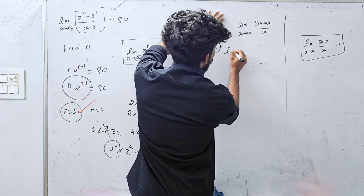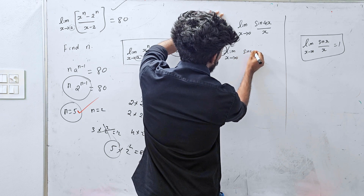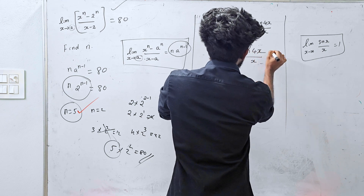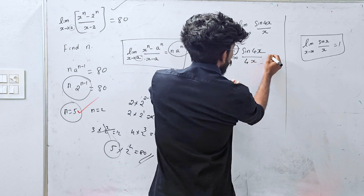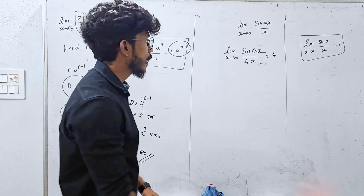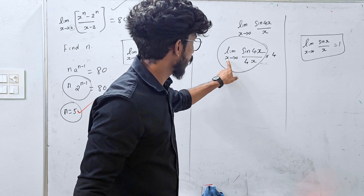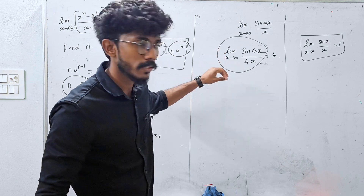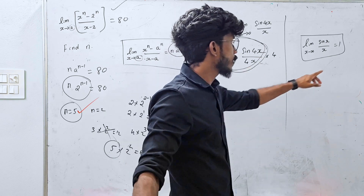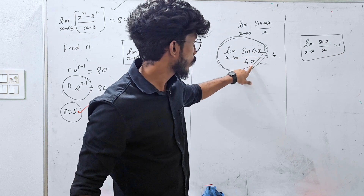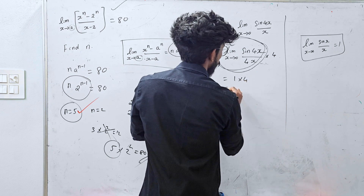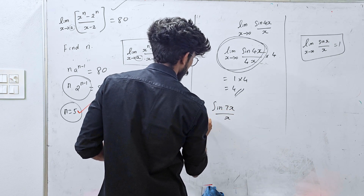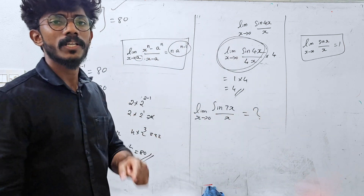Limit x tends to 0 of sin 4x / x. We use the formula limit x→0 sin(x)/x = 1. Multiply and divide by 4: sin 4x / (4x) times 4. So the limit = 1 × 4 = 4. The answer is 4.